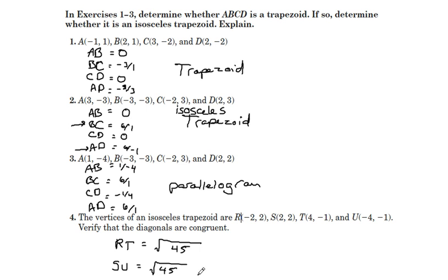Remember the distance formula: difference of the x's squared plus difference of the y's squared. Both of these come out the same, so yes, they are in fact congruent, making it an isosceles trapezoid.